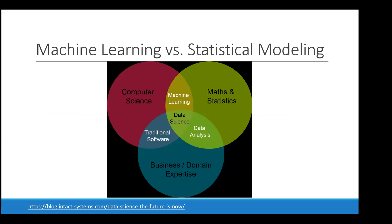This diagram shows the overlap between computer science, statistics, and domain expertise. Machine learning is thought to be the overlap between computer science and math/statistics, with traditional data analysis the overlap between math/statistics and domain expertise. Most people would agree it's a bit more nuanced, and we'll talk about how we move from the domain expertise and math/stats world over toward computer science.